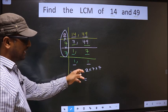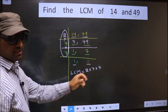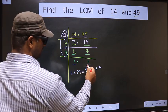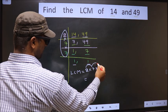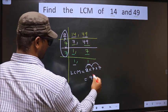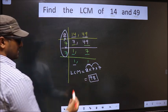Now let us multiply these. That is 2 into 7, 14 into 7, 98. So 98 is our LCM.